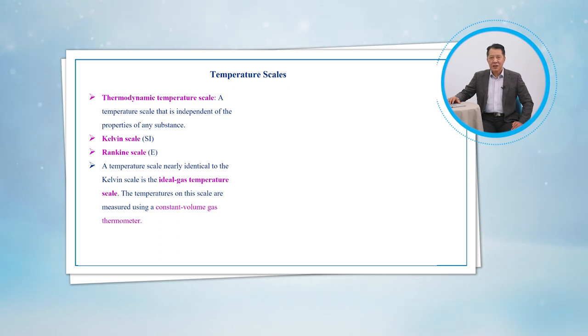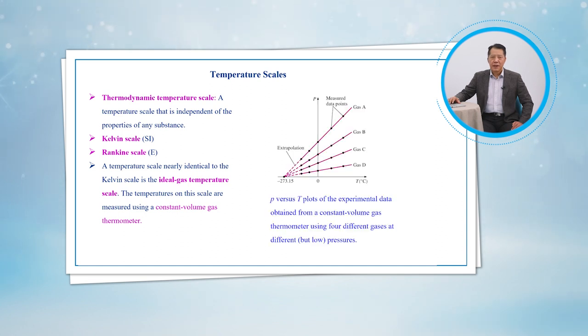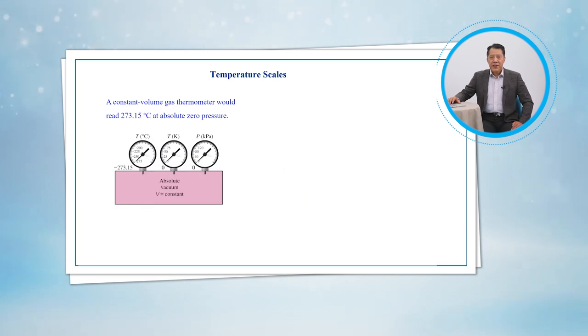A temperature scale that turns out to be nearly identical to the Kelvin scale is the ideal gas temperature scale. The temperatures on this scale are measured using a constant-volume gas thermometer, which is basically a rigid vessel filled with a gas, usually hydrogen or helium, at low pressure. This thermometer is based on the principle that at low pressure, the temperature of the gas is proportional to its pressure at constant volume. That is, the temperature of a gas of fixed volume varies linearly with pressure at sufficiently low pressures.